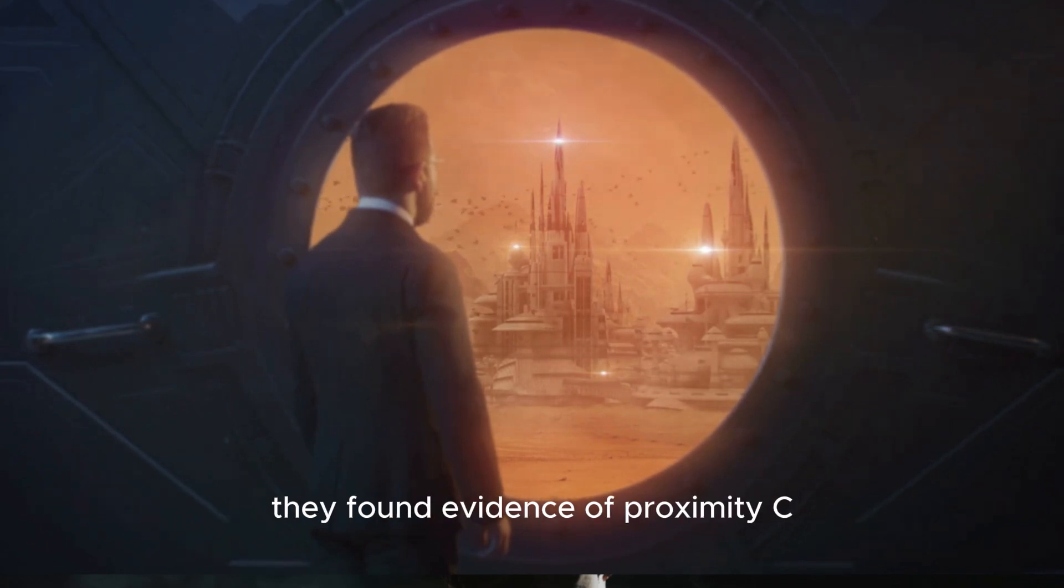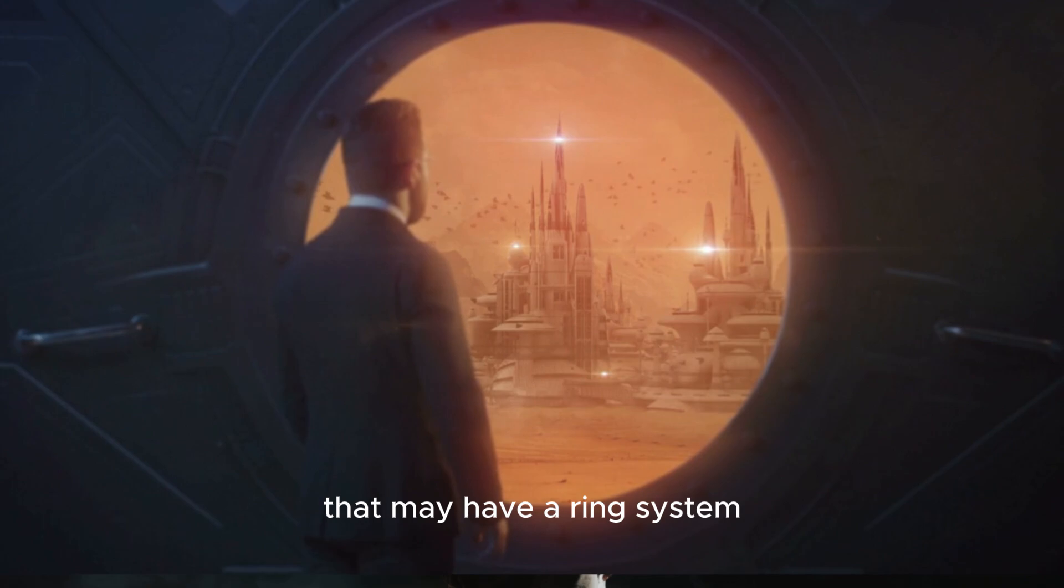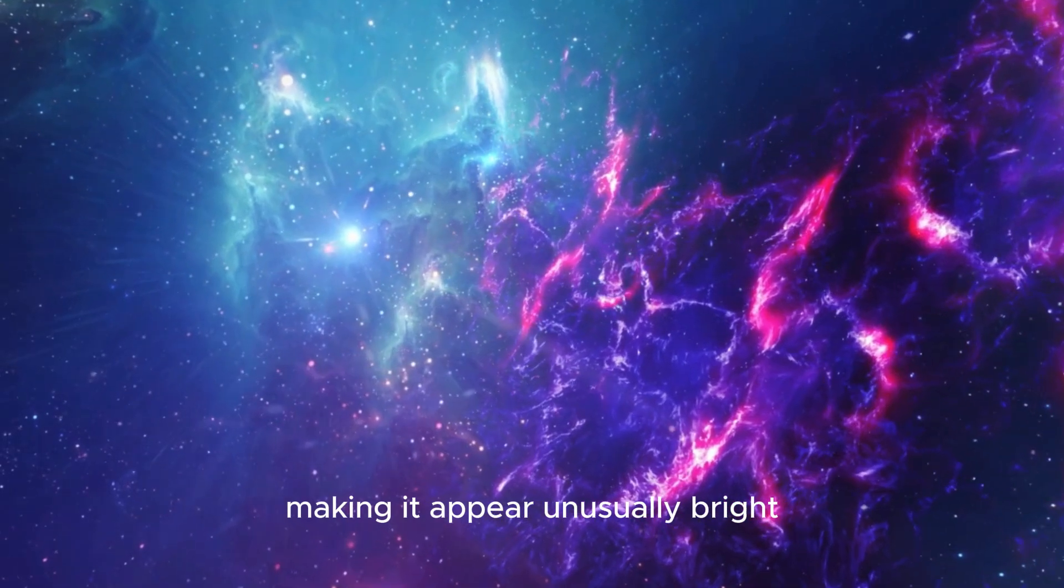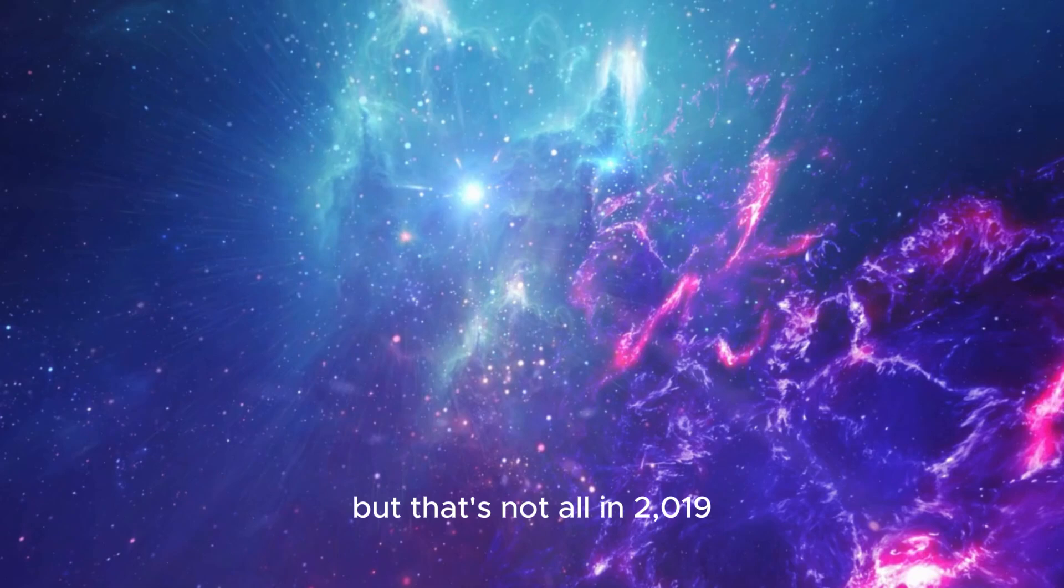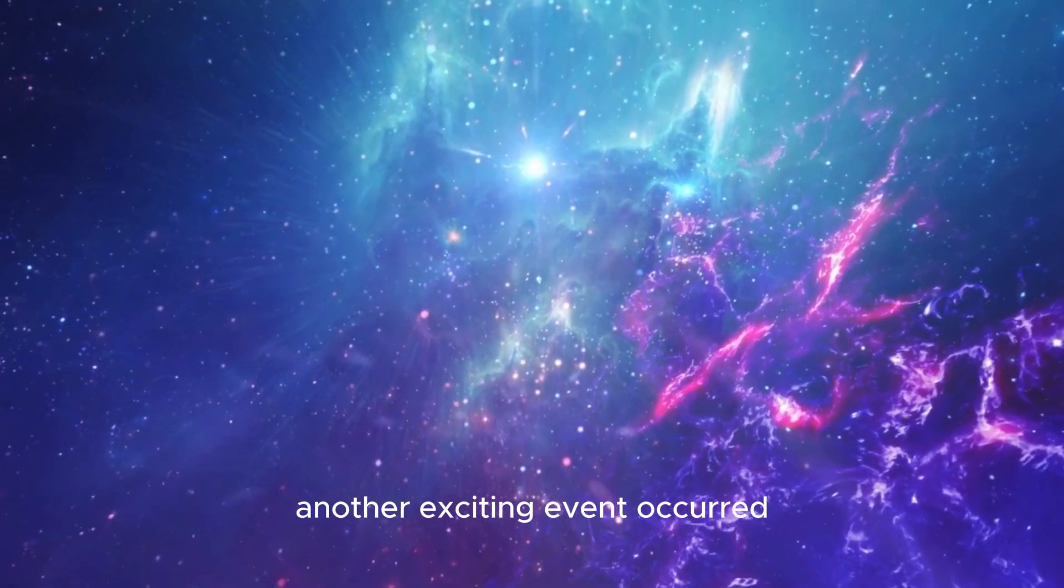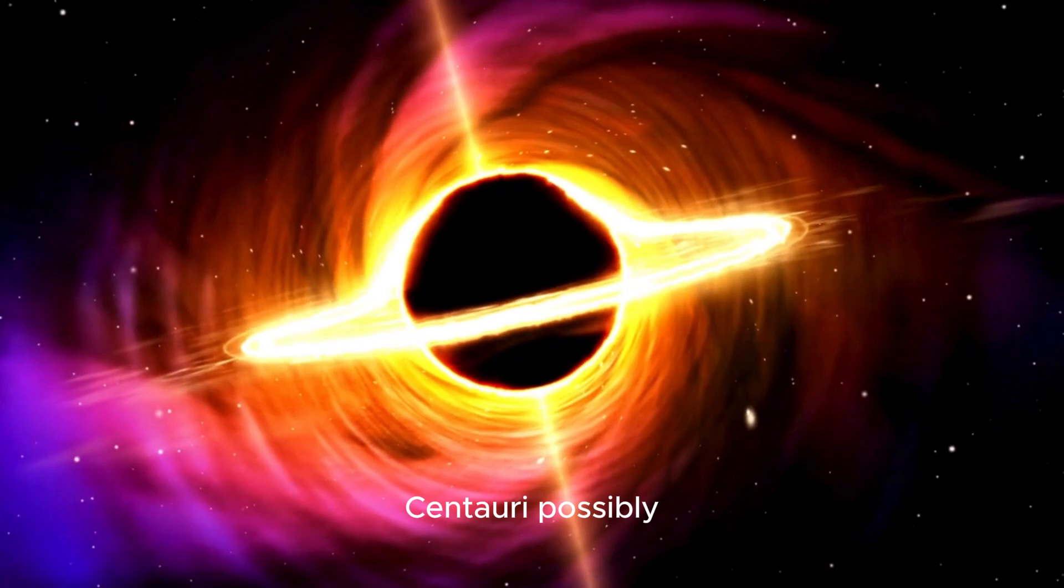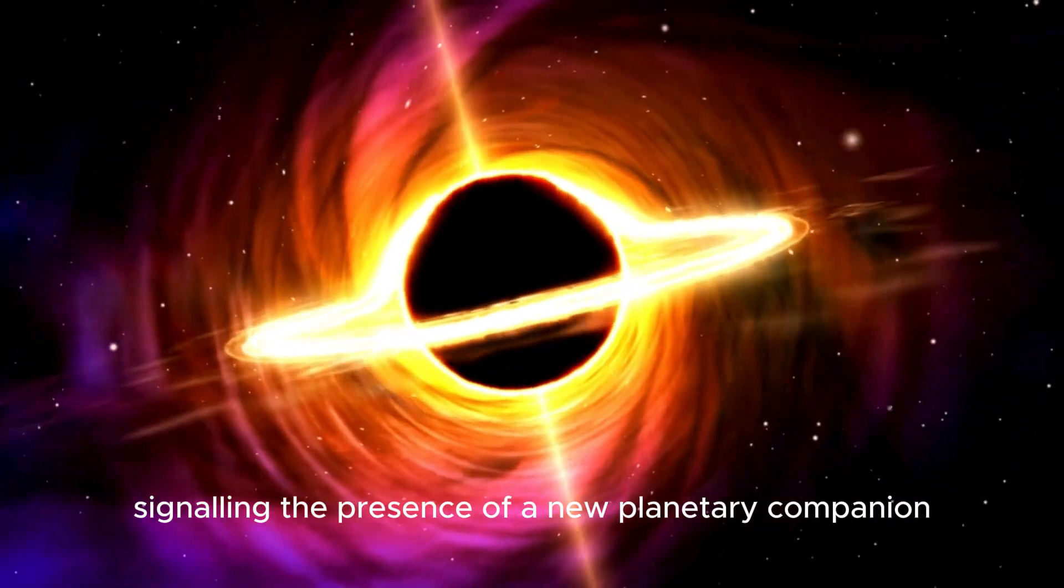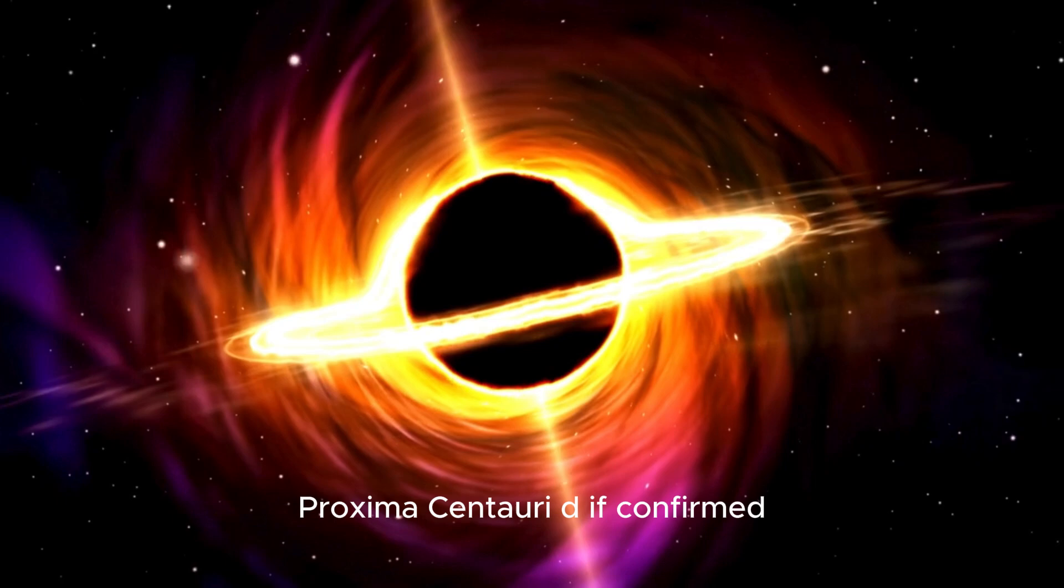They found evidence of Proxima c, a potentially stunning planet that may have a ring system, making it appear unusually bright. But that's not all. In 2019, another exciting event occurred. Astronomers detected a change in the radial velocity of Proxima Centauri, possibly signaling the presence of a new planetary companion, Proxima Centauri d. If confirmed, this planet would be about the size of Mercury or Mars.